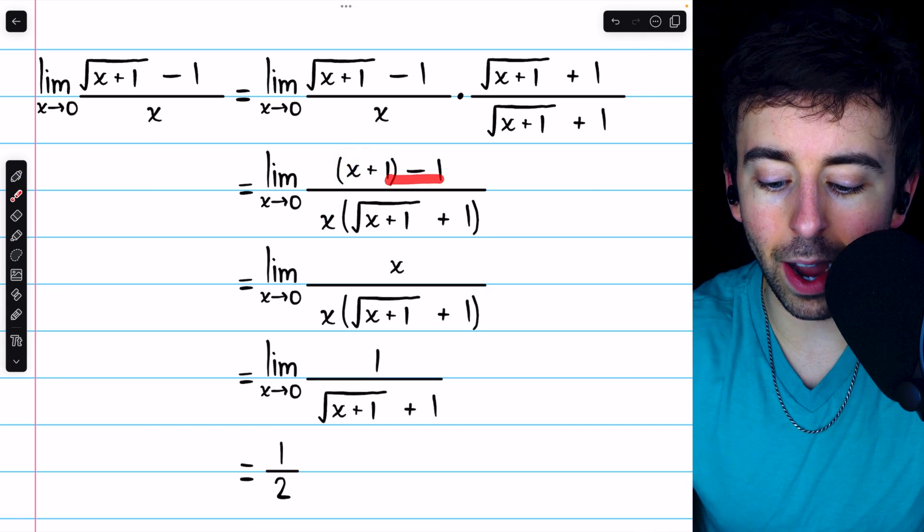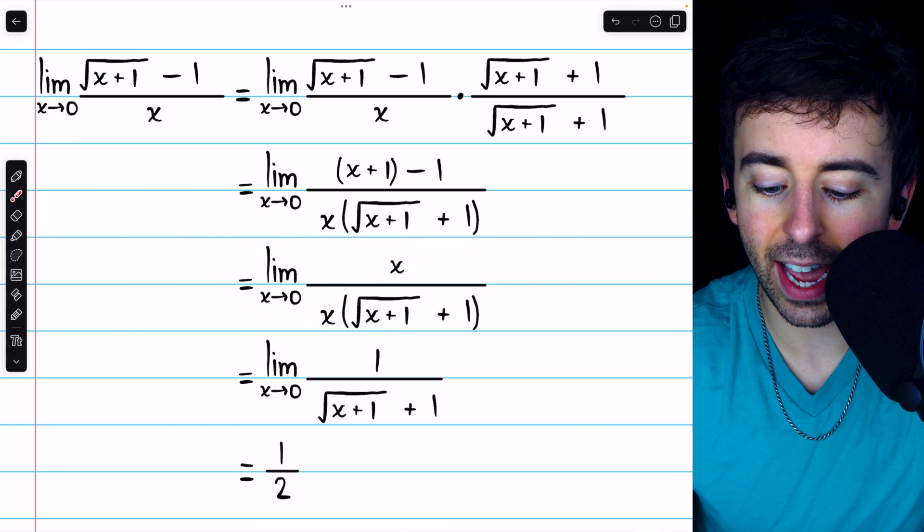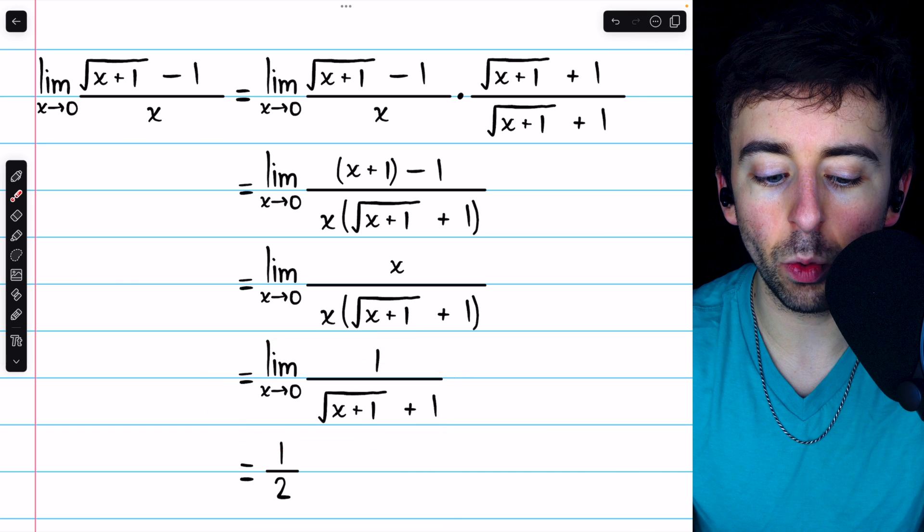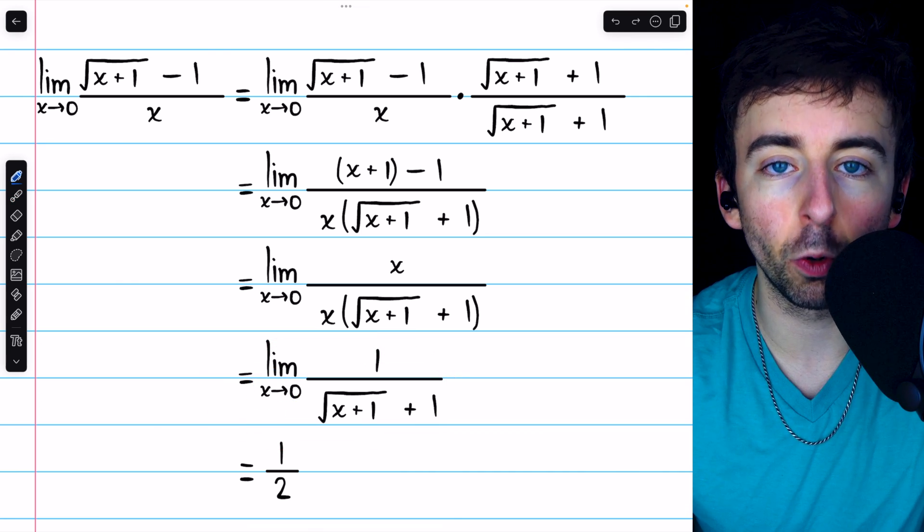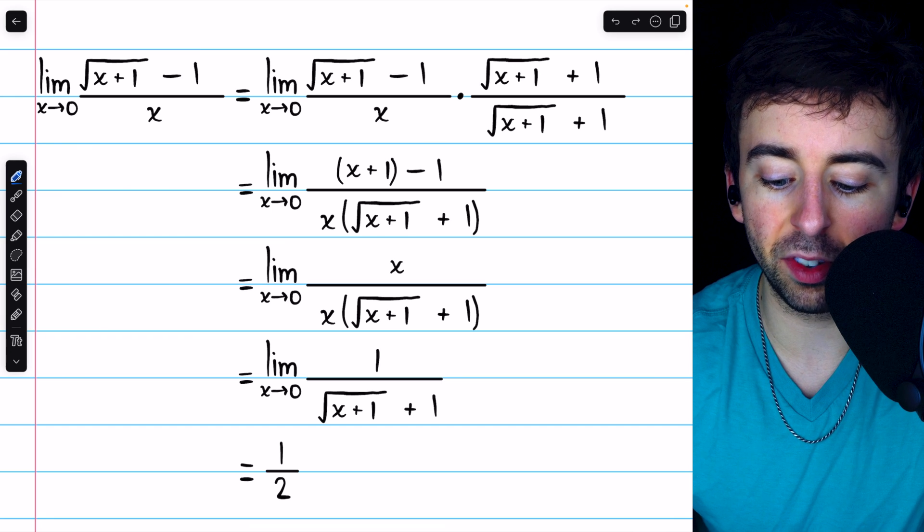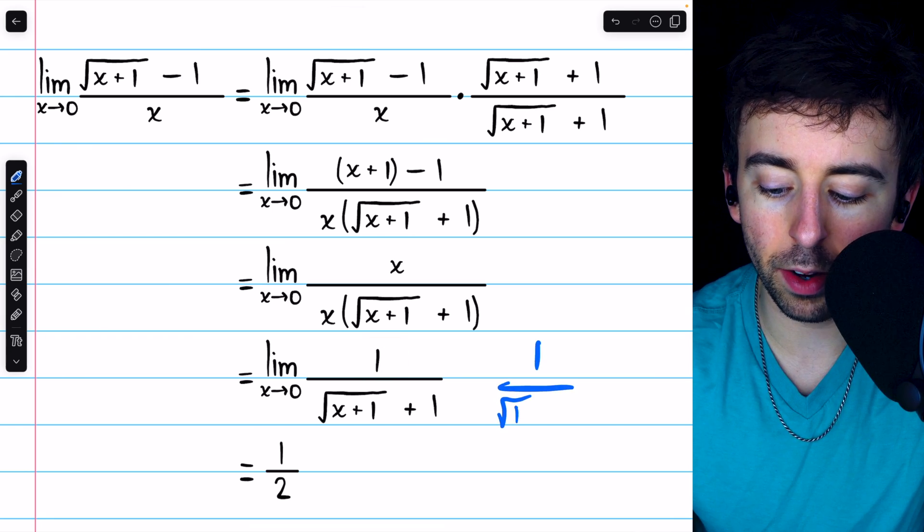So, doing 1 minus 1, we get here, and then we can cancel out the x's, and then we get here. And at this point, we can plug in x equals 0 and evaluate the limit directly. Plugging in x equals 0, we have 1 divided by the square root of 1 plus 1,